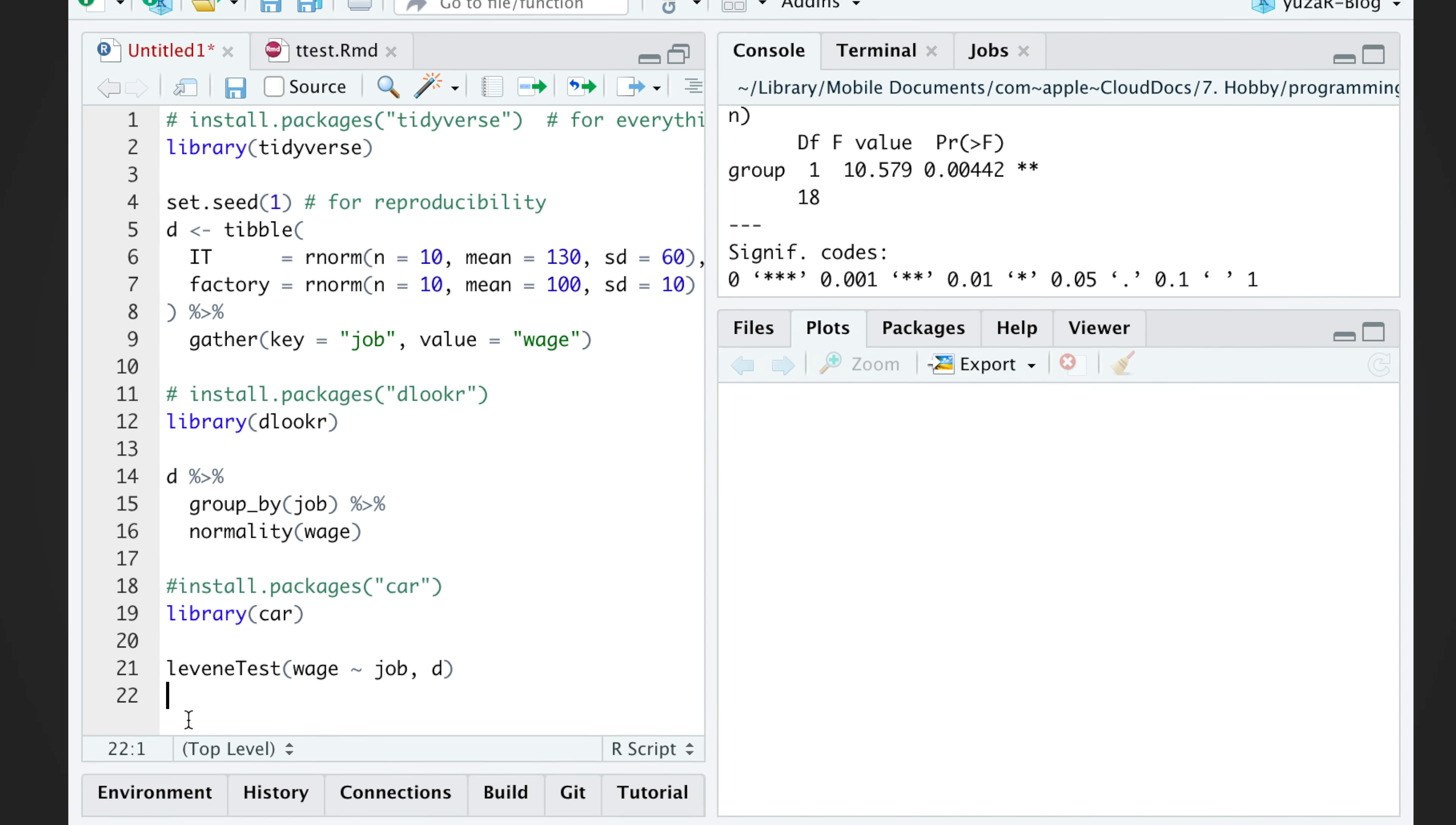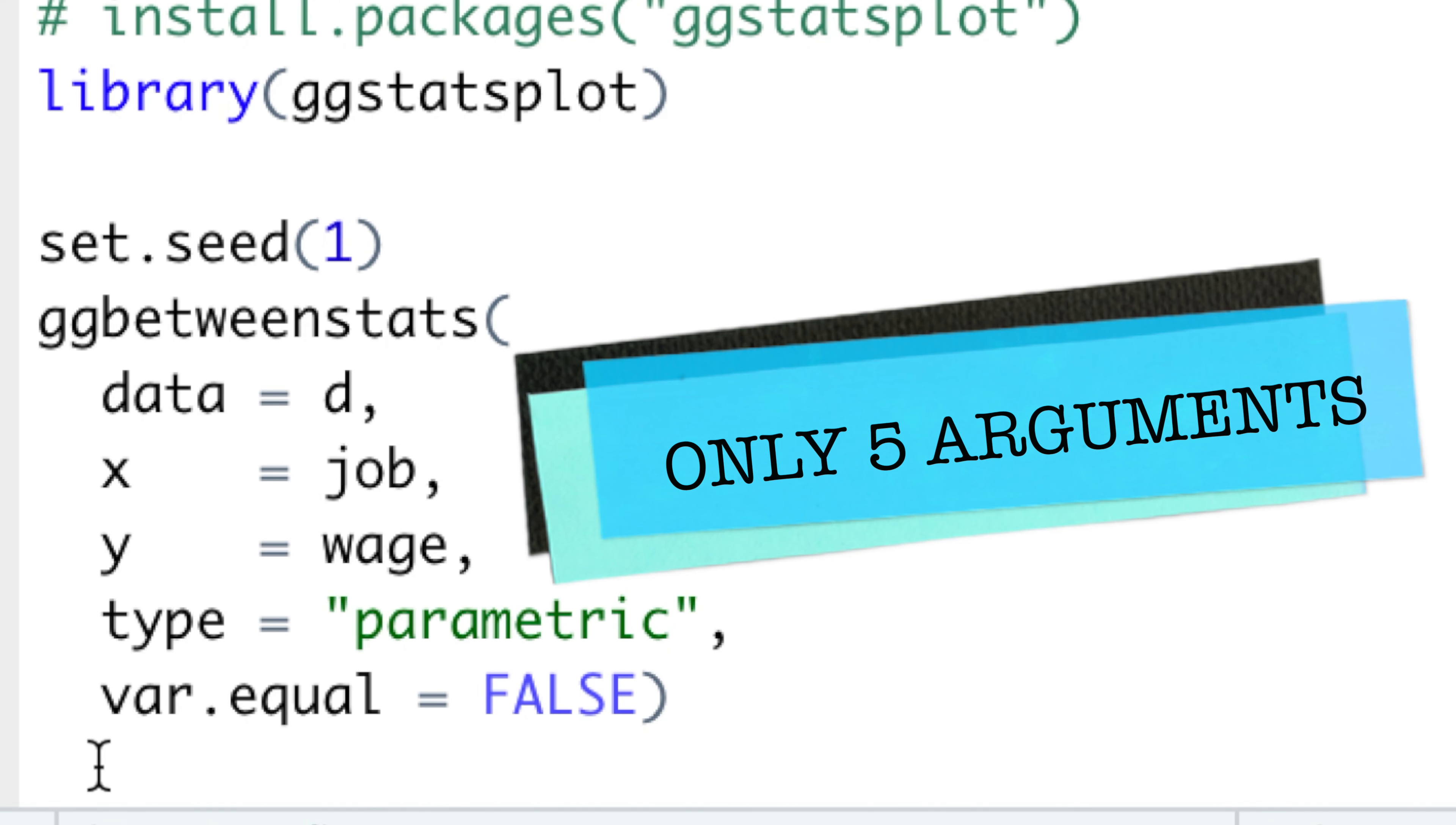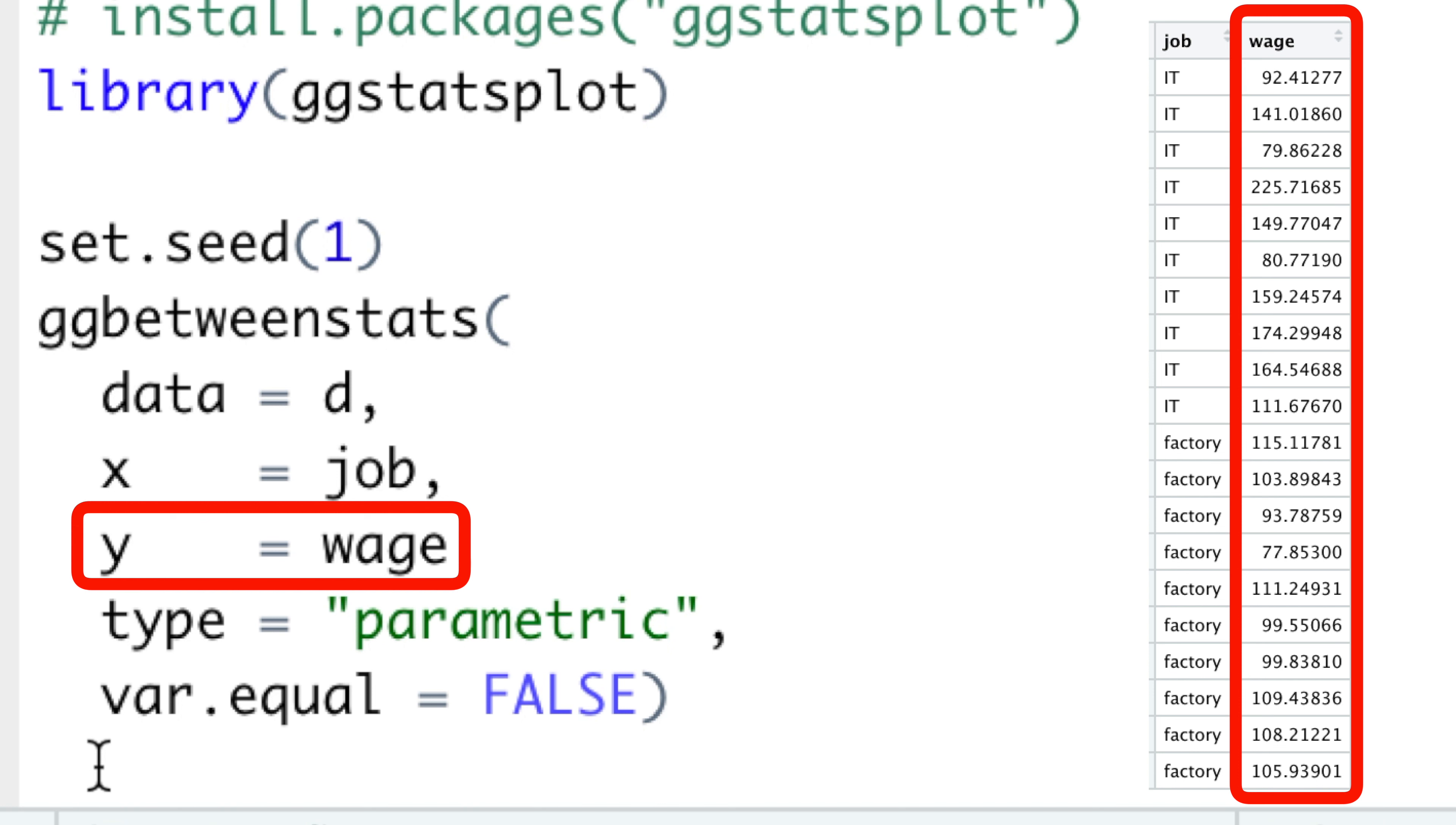And the best way to compute our test, in my opinion, is the ggbetweenstats function from ggstatsplot package, which needs only five arguments. First, our data d, which we just created, with x as the grouping variable job and y being wages of people.